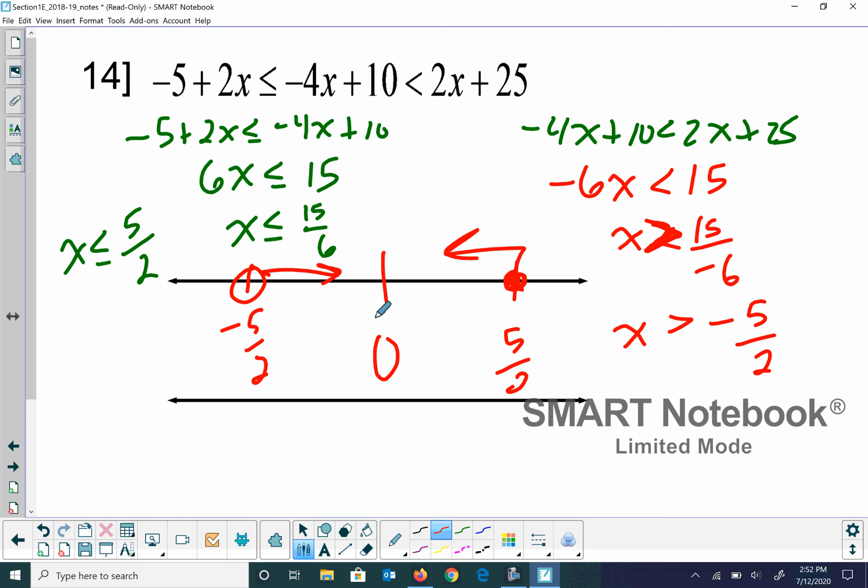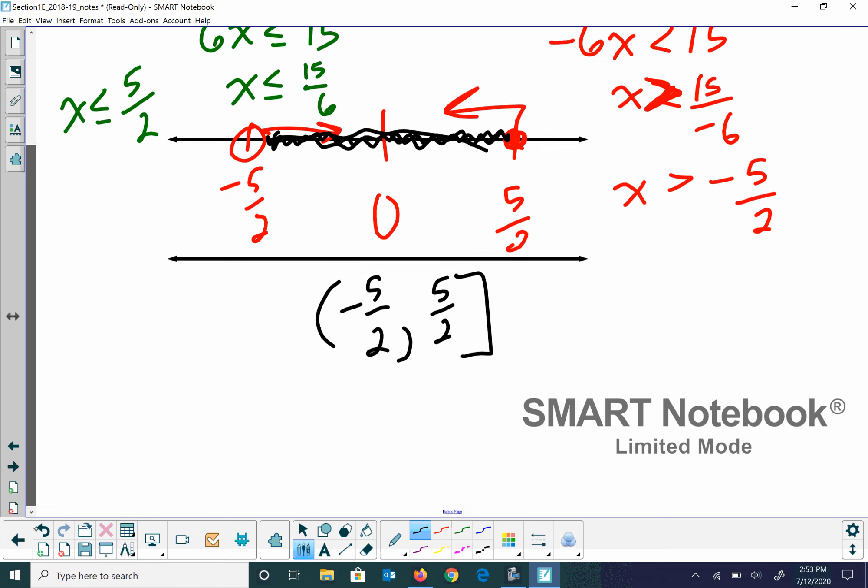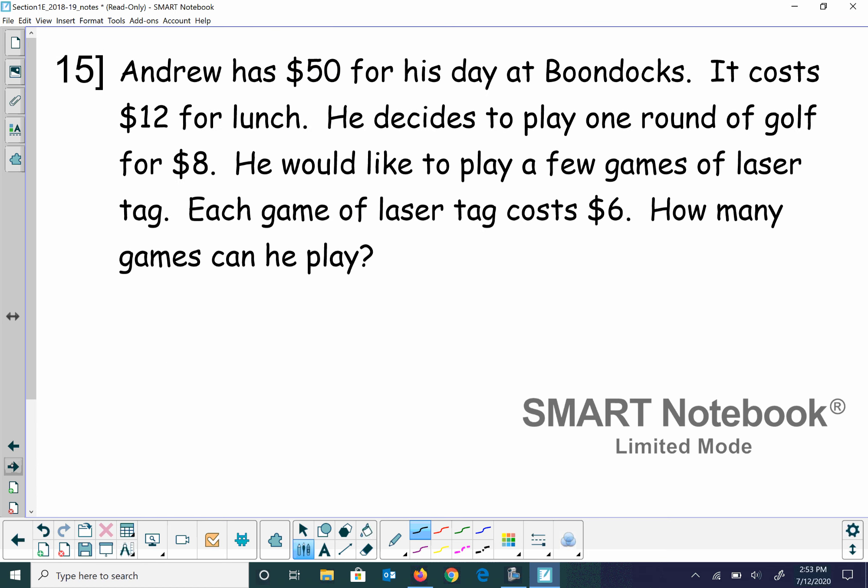So because this is put together as three parts, this has to be an AND problem. So we're looking for the region that I can plug any number in. So if I plug any number between negative 5 over 2 to positive 5 over 2 in, I'm going to get an answer that works. So my interval notation is negative 5 over 2 to 5 over 2. And that one's a square bracket because we included it.